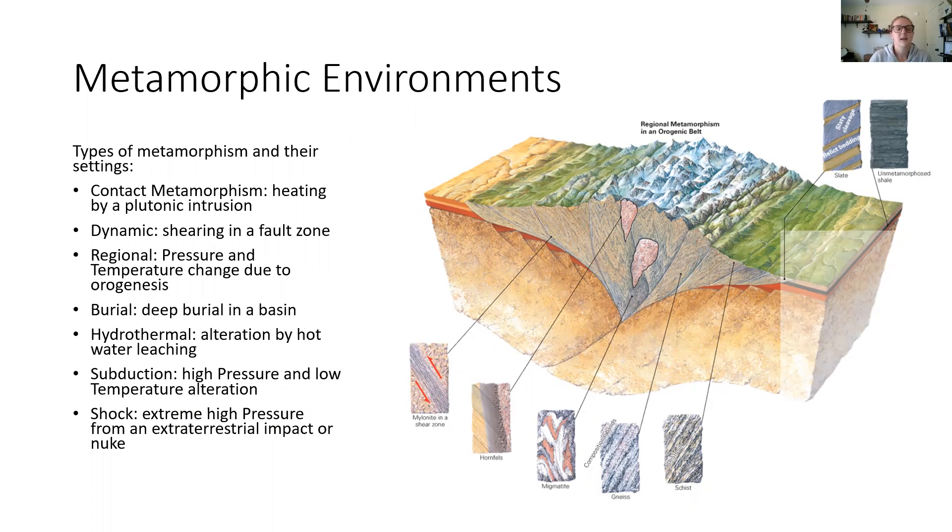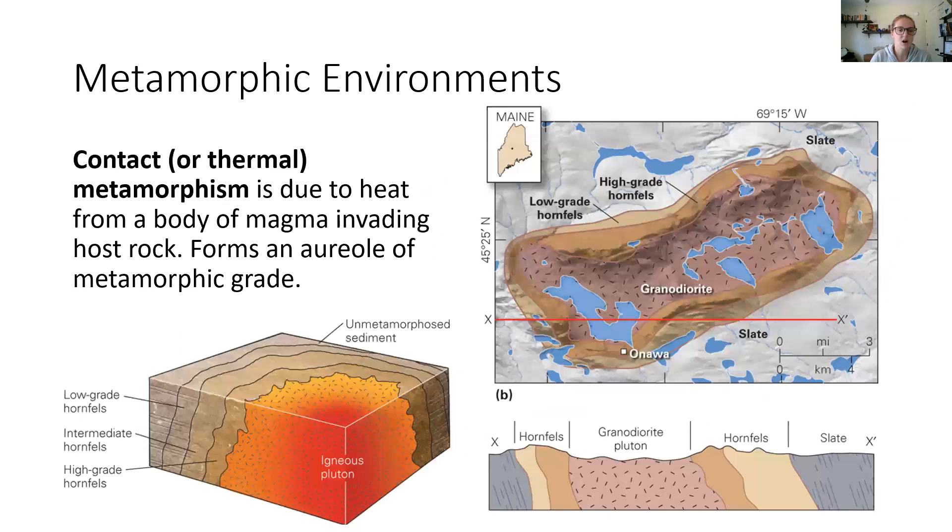So we're going to go through each of these types of mechanisms, but this slide does a pretty good job at giving you an overview of all of them. First up, we're going to talk about contact metamorphism. Again, this occurs when there's just a really large heat source like an igneous magma intrusion, and this is going to start heating up the rocks around it, causing contact metamorphism around it.